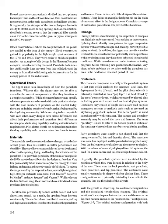Materials. The materials used in construction have changed over the last several years, resulting in better performance and durability. The use of incorrect materials can have a detrimental effect on the opening, flying, and landing characteristics of the parachute. The growth in popularity of ram air canopies in the 1970s required new fabrics—very low permeability fabric was necessary for the canopy to remain inflated and maintain the aerodynamic airfoil shape. To reduce drag created by suspension lines, newer lightweight high-strength materials were used: first Dacron, followed by Kevlar, and now Spectra and Vectran. While reducing line bulk and drag, these materials have introduced newer problems. The ultra-low permeability fabrics inflate faster and have almost zero stretch, so opening forces increase considerably. These effects have contributed to newer packing and deployment methods to reduce loads on the parachutist and harness, which in turn affect the design of container systems.